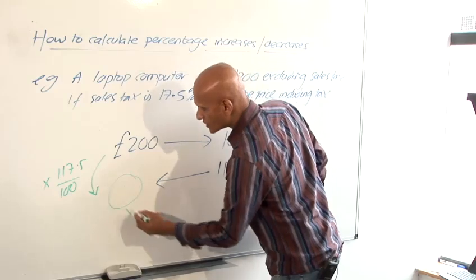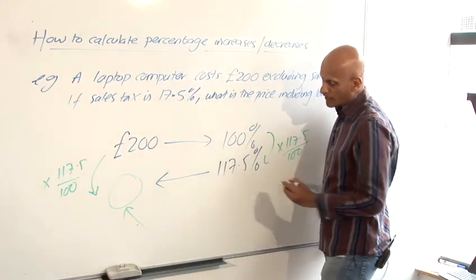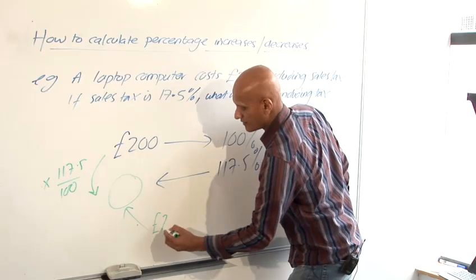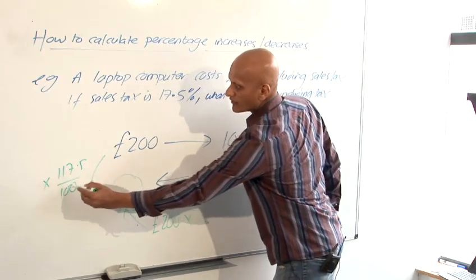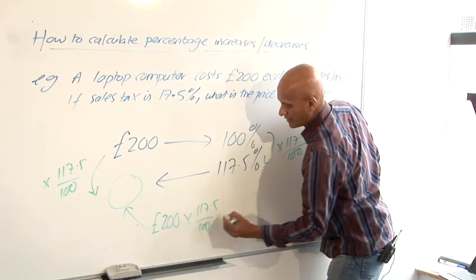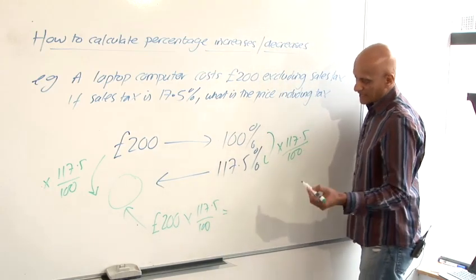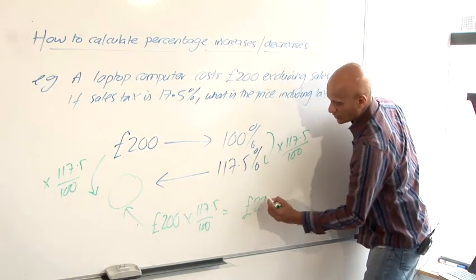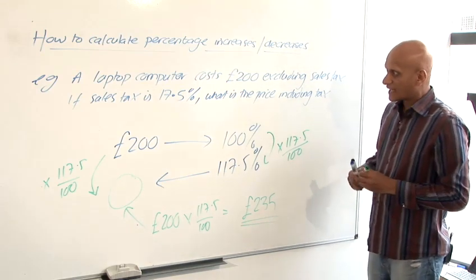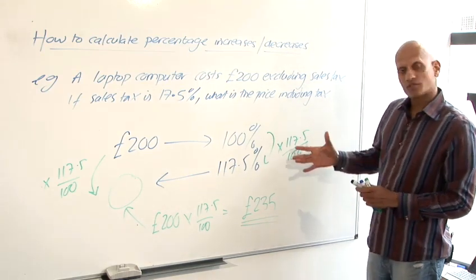And so our answer which goes here will be found by following this calculation, 200 pounds times 117.5 over 100. And that gives us again, sticking in the calculator, our answers being 235 pounds.